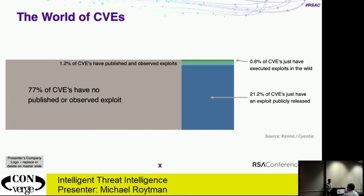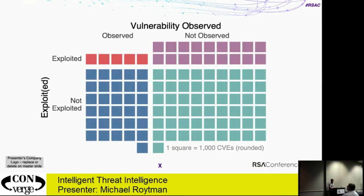This could be the end of the talk if we just wanted to fix every vulnerability that exists today in our environments — get the data, overlay it over your environment, remediate that 1.8% and you're done. Except it doesn't work that way. It's a stochastic process; attackers are developing new exploits, new vulnerabilities are coming out. We need a process for identifying what it is about a vulnerability that makes it a risk. The problem gets even more precise when you look at which vulnerabilities we can see in our environment at all. Scanners only write signatures for about 30% of vulnerabilities in the NVD — for 70% we just don't know and we'll never see them.